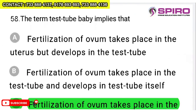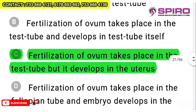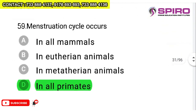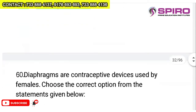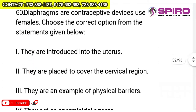Question 58: the term 'test tube baby' implies fertilization takes place in vitro (in a test tube) and then development occurs in vivo (in the uterus). So first vitro, then vivo — option C is correct. Question 59: menstrual cycle occurs in which animals? It occurs in all primates — that is the right answer. It won't likely come this way in the exam, but if it does, menstruation occurs in all primates.